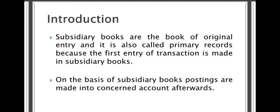Today we will discuss about subsidiary books. We all know how to generalize the transactions. Journal entries will be recorded in the primary book. Subsidiary books are also called primary books because the first entries take place in the primary book only. For the convenience of management and accounting, the same categorized journal entries will be recorded in separate books. All those books are called subsidiary books.